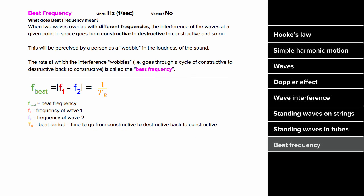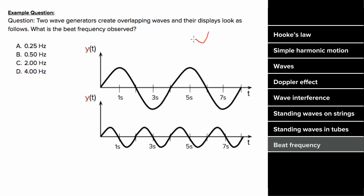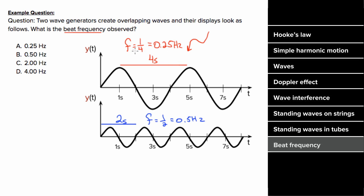To determine the beat frequency, you simply take the difference of the two overlapping frequencies. If there is no difference, the beat frequency is zero — no wobbles. The further apart the two frequencies, the more wobbles per second. The beat period is one over the beat frequency. For example: if the first wave has a period of 4 seconds, its frequency is 0.25 Hz. If the second wave has a period of 2 seconds, its frequency is 0.5 Hz. The beat frequency is 0.5 minus 0.25, which equals 0.25 Hz.